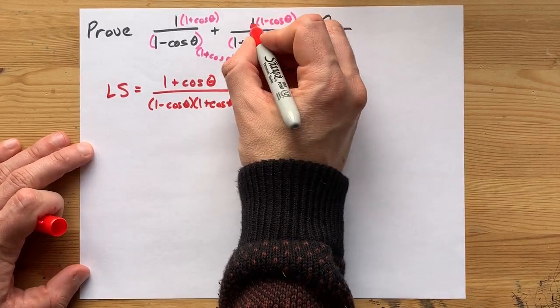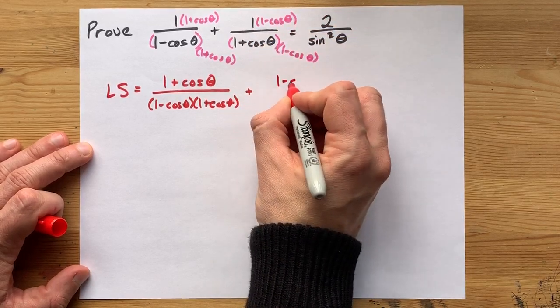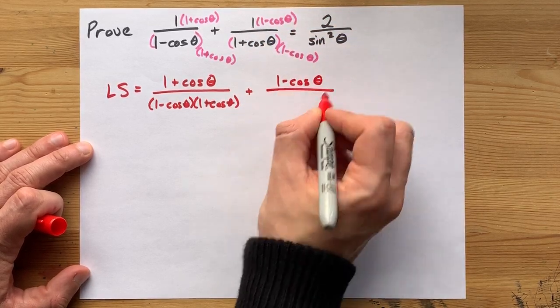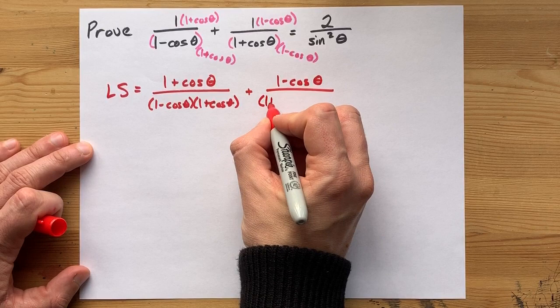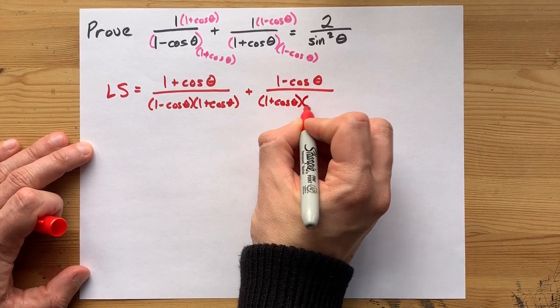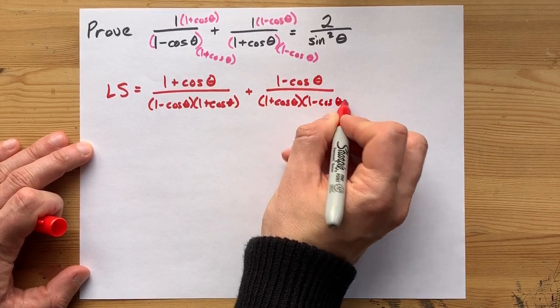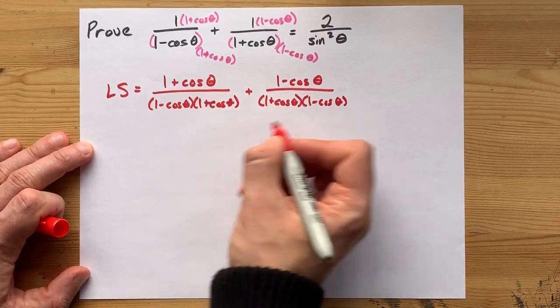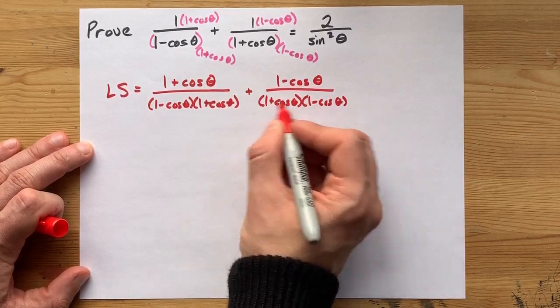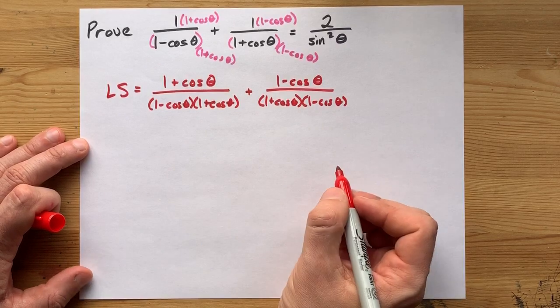We're going to add that to this. 1 times this is 1 minus cos theta. And the bottom is 1 plus cos times 1 minus cos. It doesn't matter that the minus went first here and the plus went first here. They're still multiplied by each other.